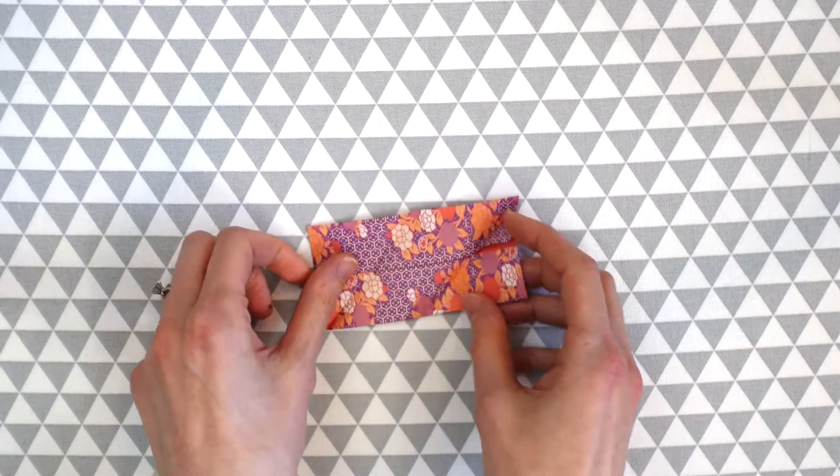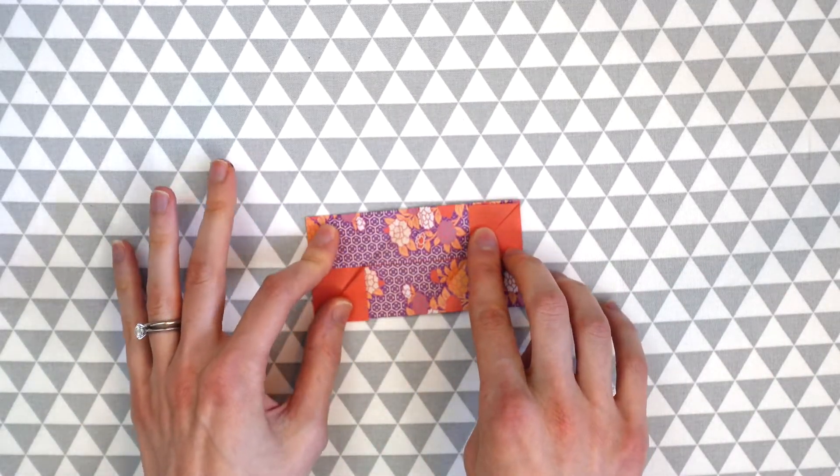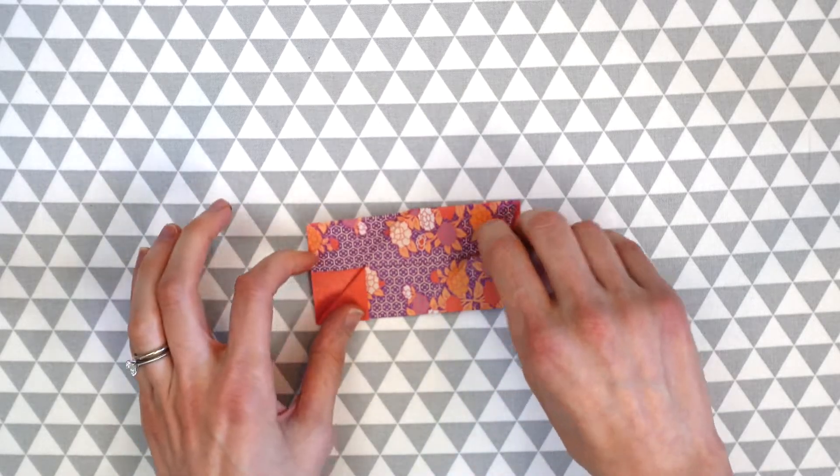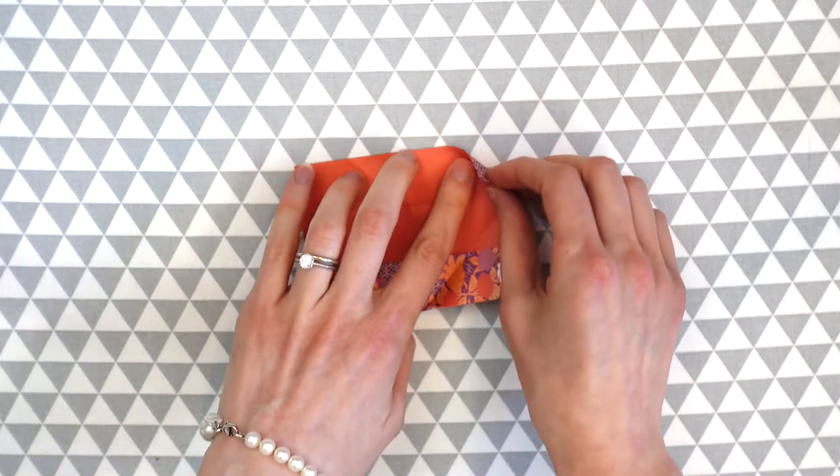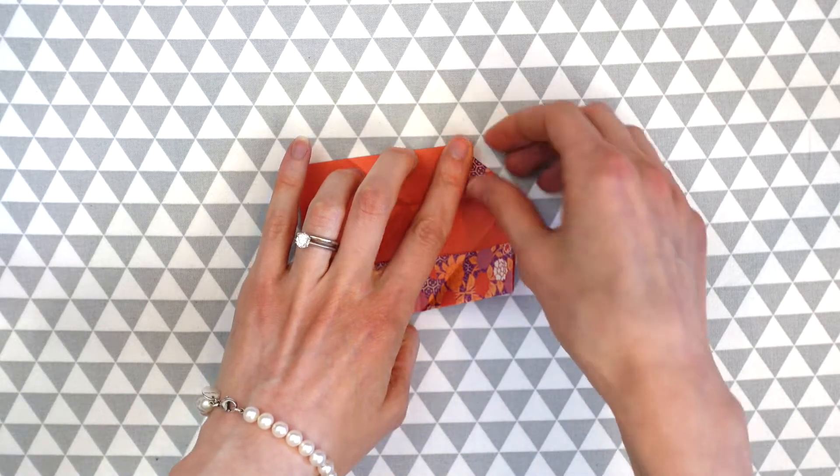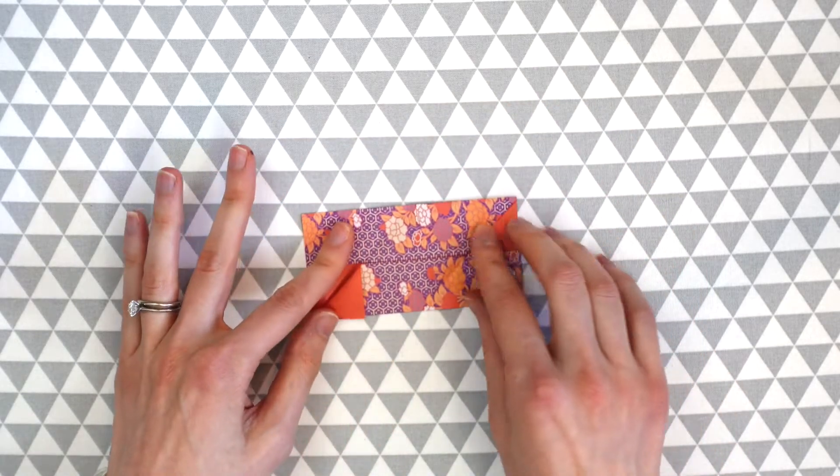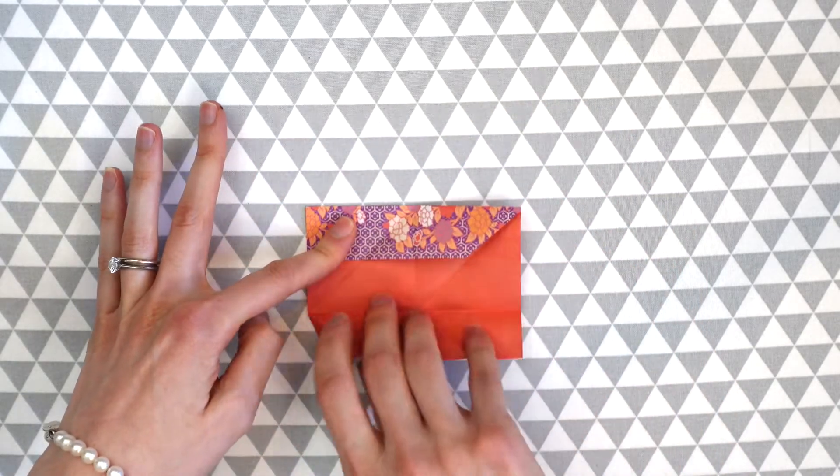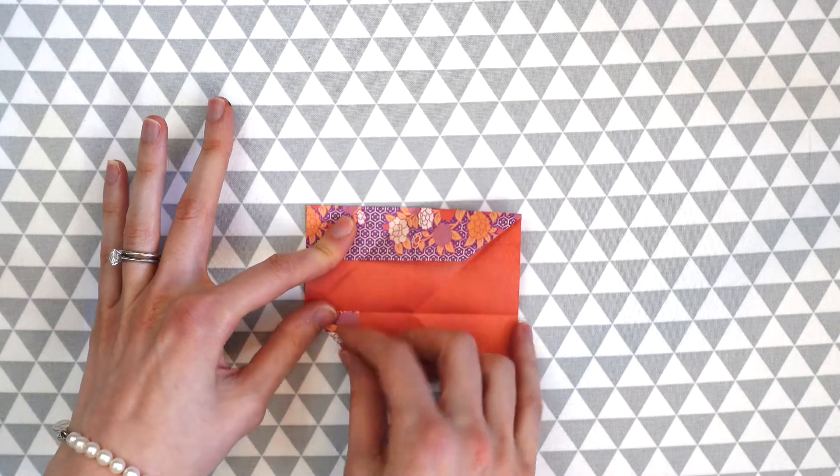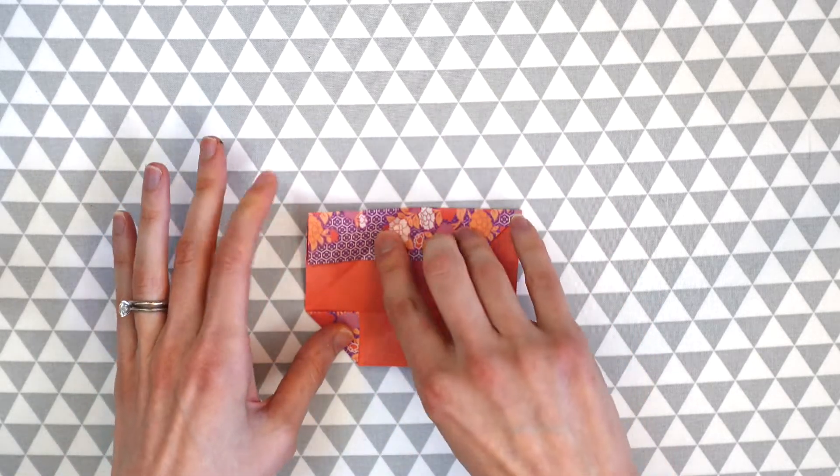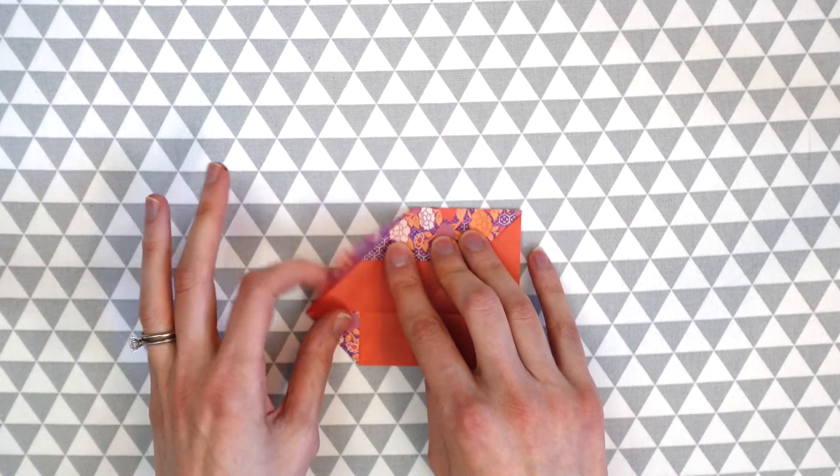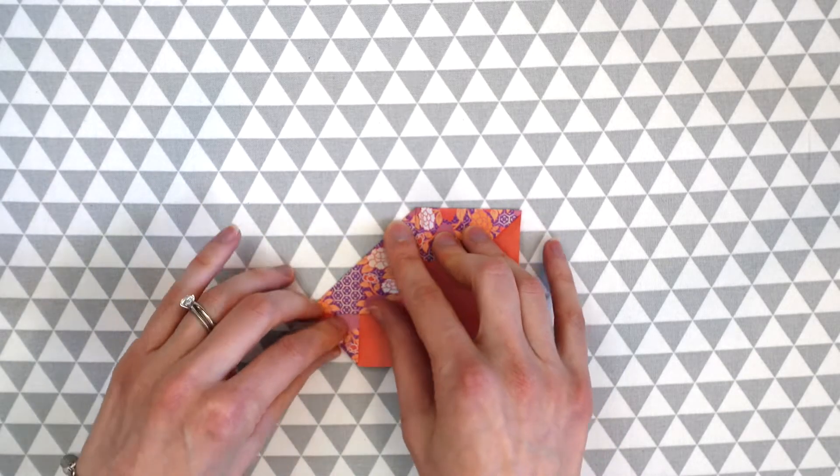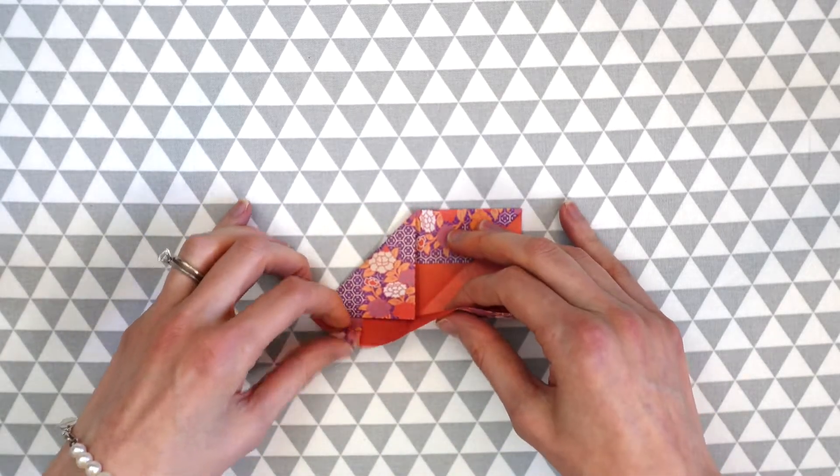Now we'll unfold this and notice we have two little triangles that we made. We're going to open this first flap and fold our triangle down. On the bottom we're going to open this up, fold the triangle down, and then this little flap that's sticking up, we're going to fold that piece down and put this bottom flap up.